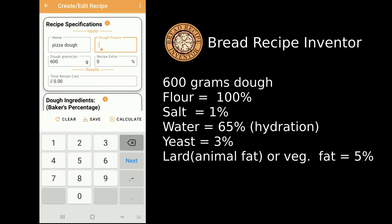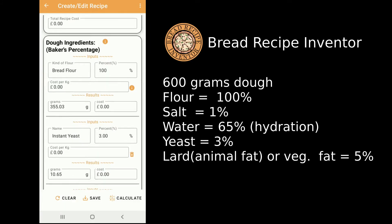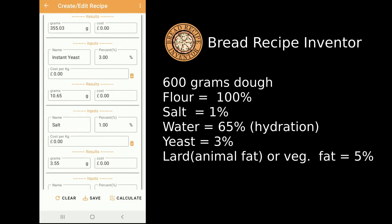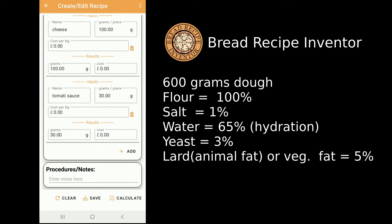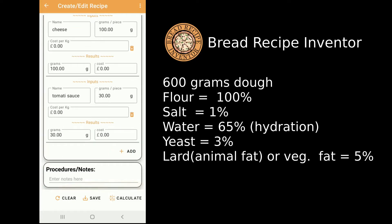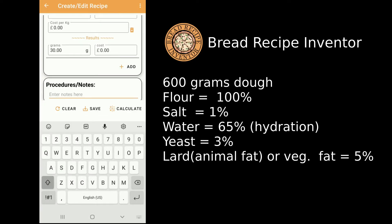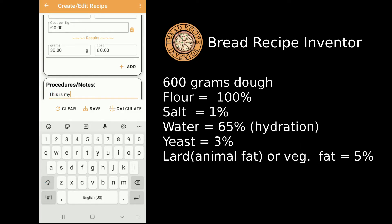Indicate two pieces of dough here. If you want to add additional information about your recipe, go down to the Procedure Notes and enter the notes you want — for example, 'This is my favorite pizza recipe.'